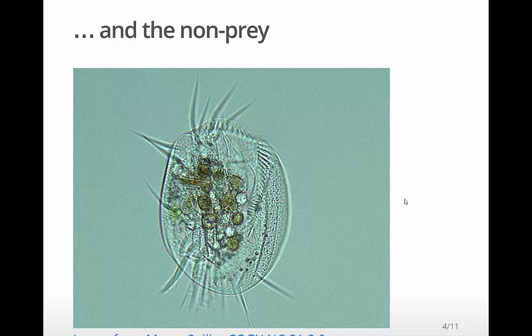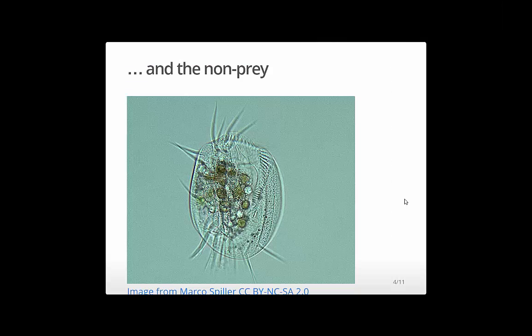And then the other part of this experiment which I won't talk about much in this particular video is they also sometimes include a non-prey protist in there which is this guy, Euplotes. And when they add ground up flatworms to a culture of Euplotes, these guys undergo a morphological change where they grow a lot bigger and then they become inedible by the stenostoma.